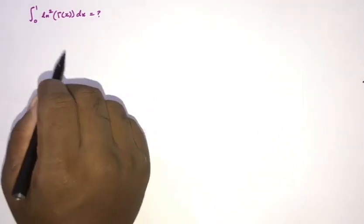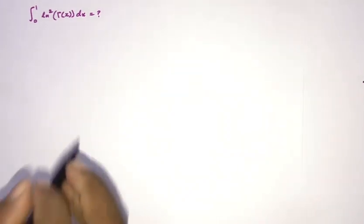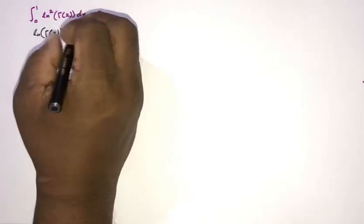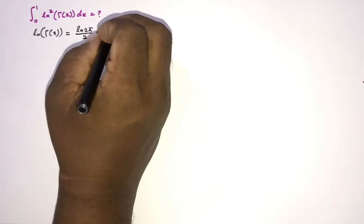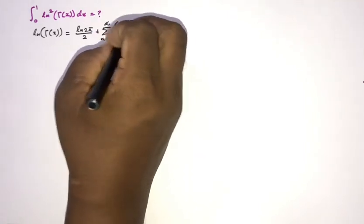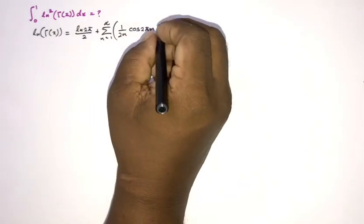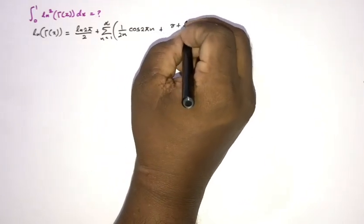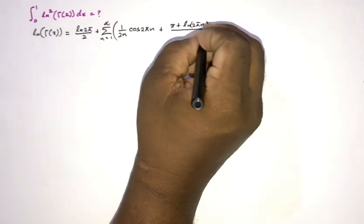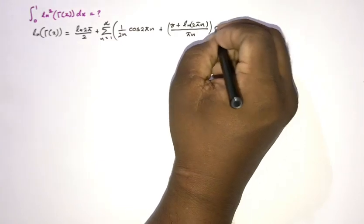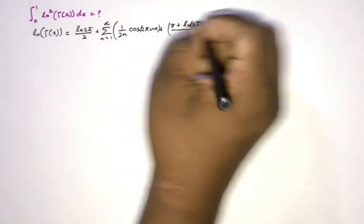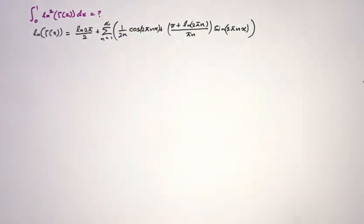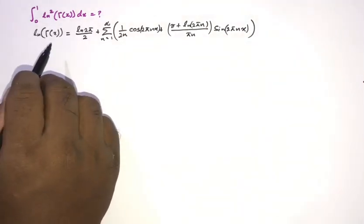In a previous video we derived the Fourier series of ln Γ(x). The formula is: ln Γ(x) = ln(2π)/2 + Σ(n=1 to ∞) [1/(2n) · cos(2πnx)] + Σ(n=1 to ∞) [(γ + ln(2πn))/(πn) · sin(2πnx)]. This is the Fourier series of ln Γ(x).